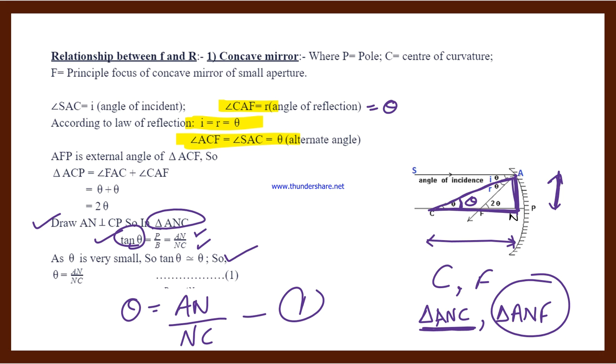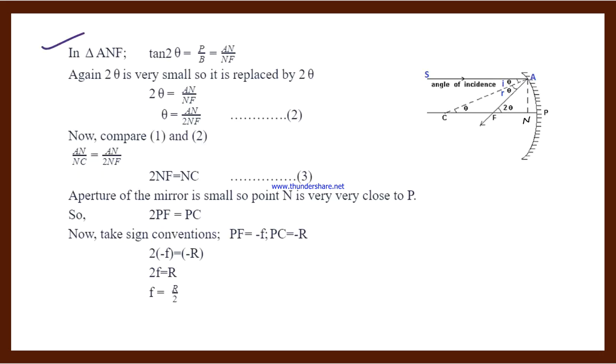Then the second equation - where is F? So next we choose F, triangle ANF. Again, tan of the angle - we have 2 theta, so we write tan 2 theta equals perpendicular AN divided by base FN. Again, tan 2 theta is a very very small angle, so we replace it. We write 2 theta equals AN divided by FN. Now bring the 2 to the other side, so theta equals AN divided by 2 NF. This is our equation number 2.